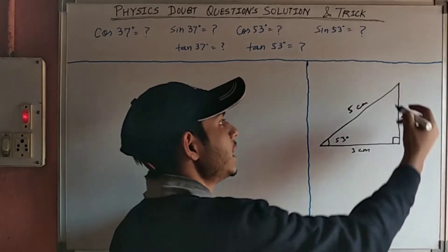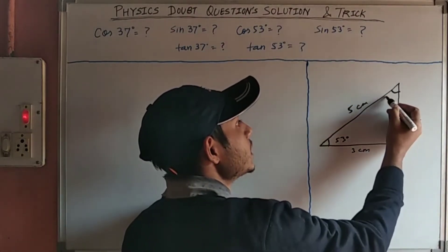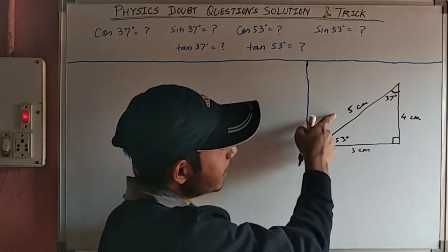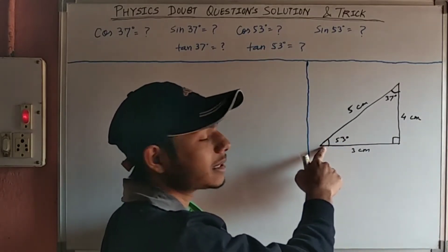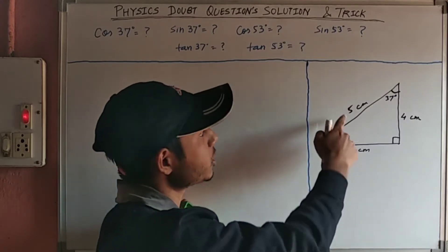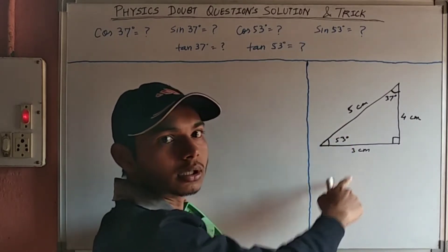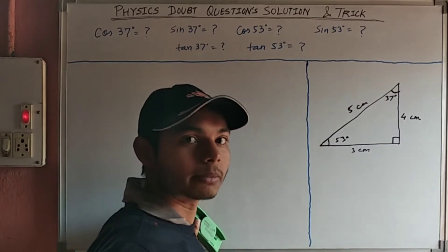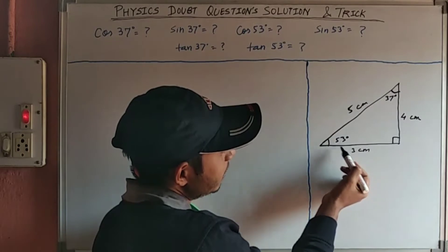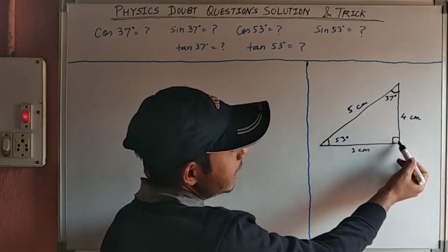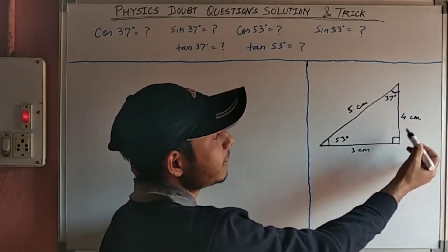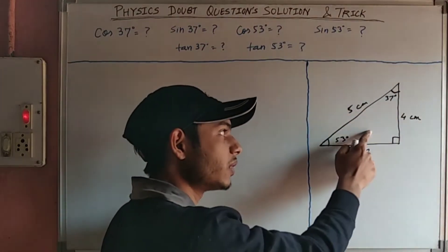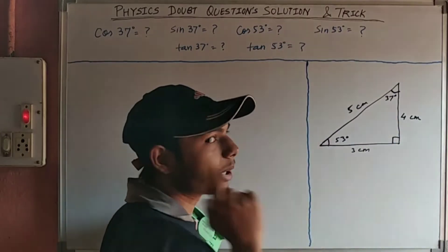143° — how much is left out of 180°? That's 37°. If the sides are 5 and 3, the angle will be 53°; otherwise it will be different. Suppose the sides are 6 and 8, the angle will be different — not 53°. So remember: 5 and 3 gives 53°, and 53° + 90° = 143°, leaving 37°. This was the first thing to remember.